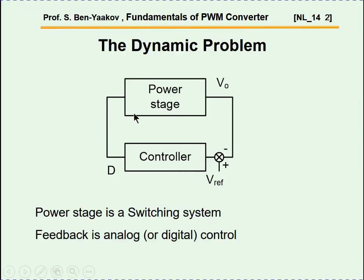The problem we have here is that we have a power stage with an output voltage that we want to control and stabilize. To do that, we compare it to a reference at this junction, feed the difference to a controller, and generate a duty cycle to correct the output whenever it deviates from the desired value. This part is a switching system, and this part could be an analog or digital controller.